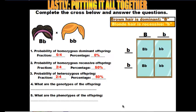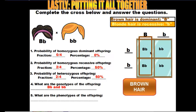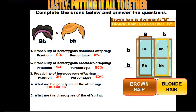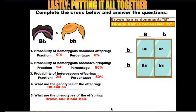Looking at the genotypes of the offspring, I see big B little b, big B little b, little b little b, and little b little b — so really only two types of genotypes: big B little b and little b little b. For the phenotypes: the offspring with the dominant brown hair gene will have brown hair, and the offspring with only blonde hair genes and no dominant brown hair gene will have blonde hair. So the phenotypes of the offspring are brown hair and blonde hair.